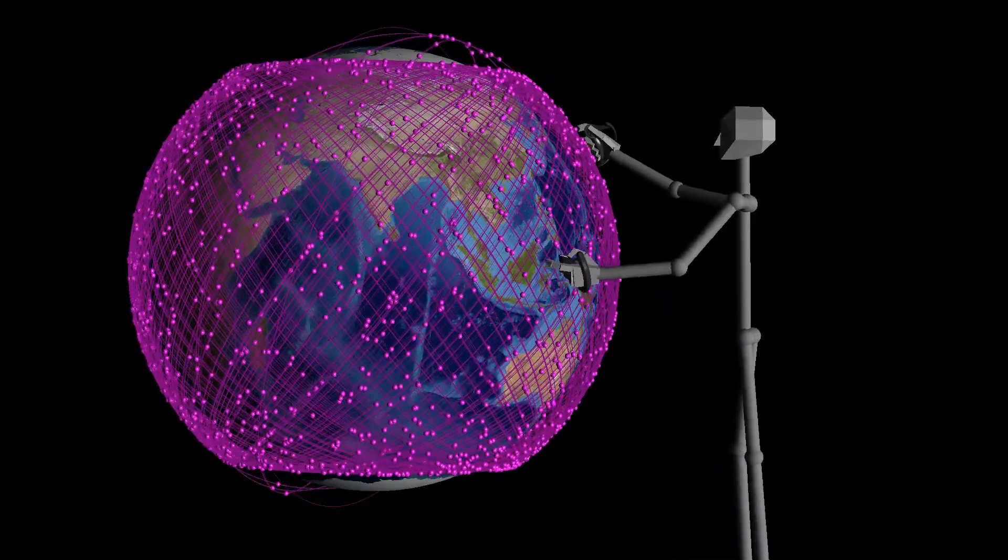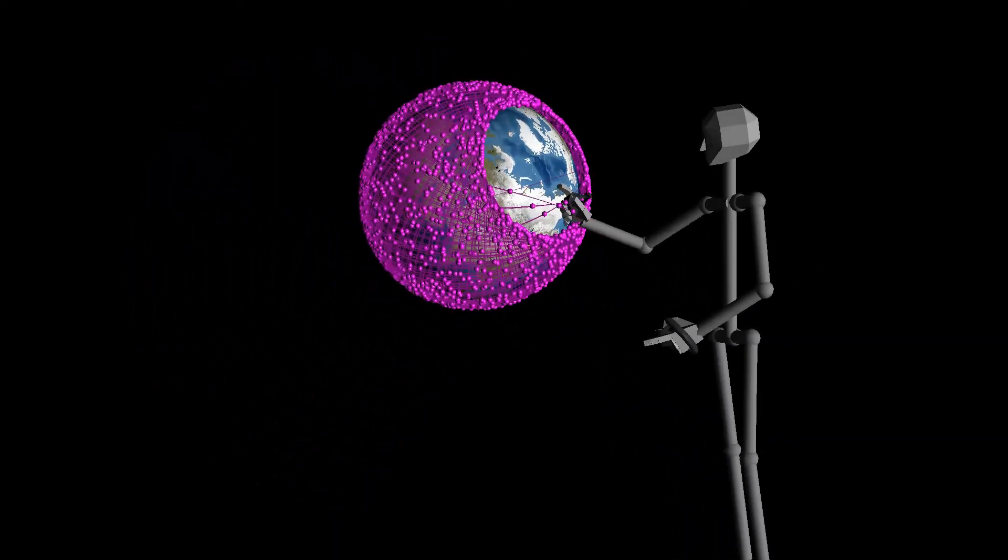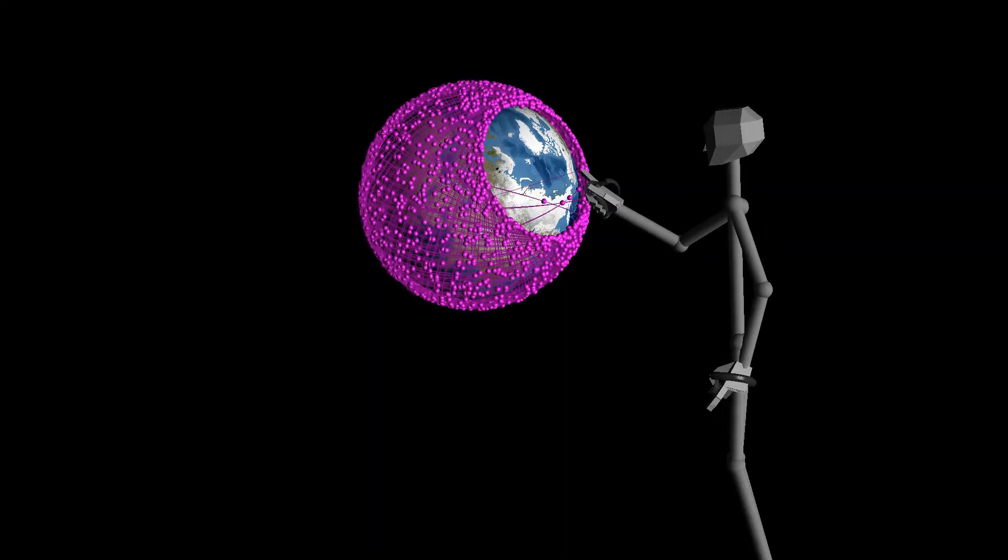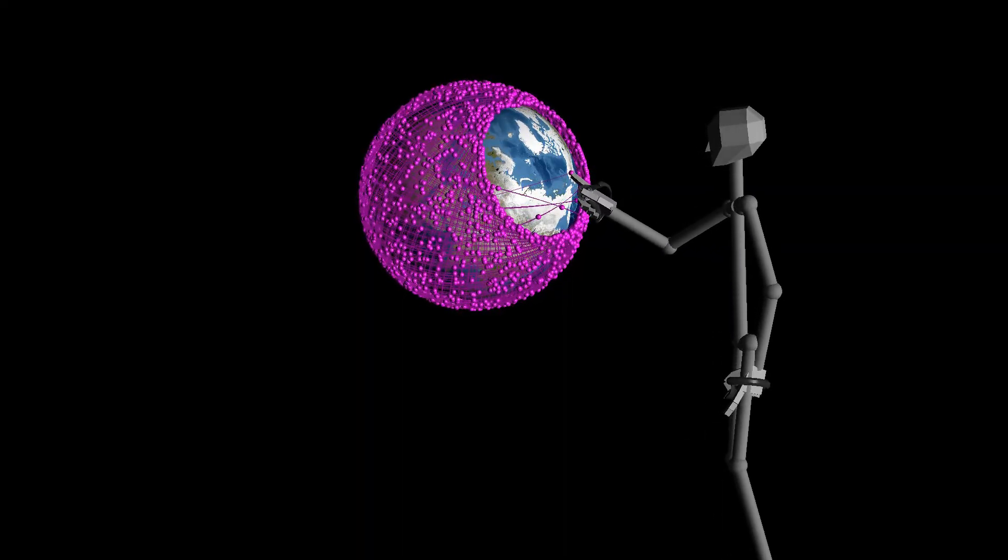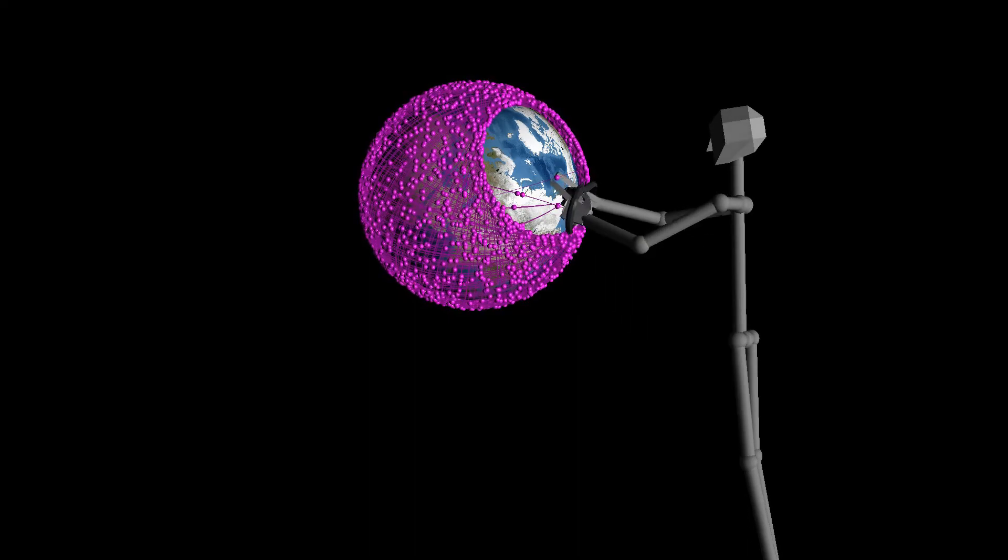But then they placed three of them at an inclination of 97.5 degrees, chasing each other on the same orbit. Those are these three, which I guess are meant to provide internet service to the Arctic and to Antarctica.